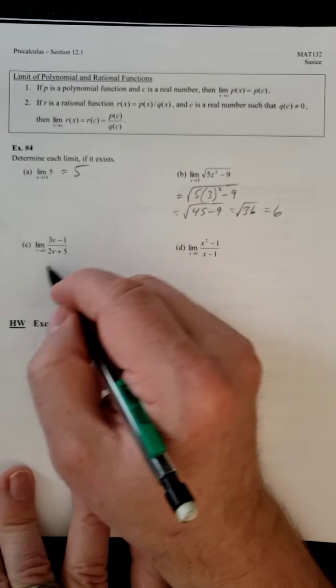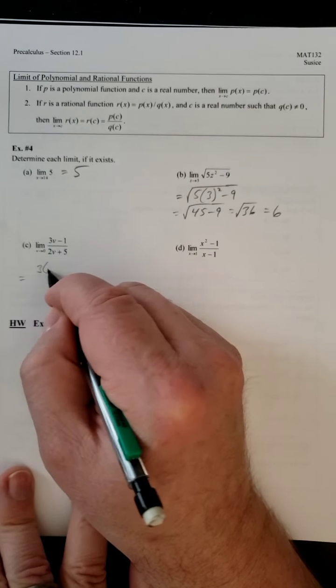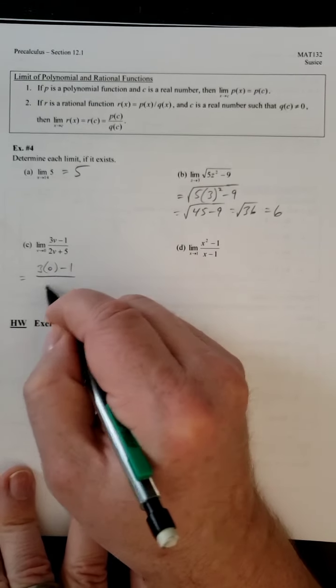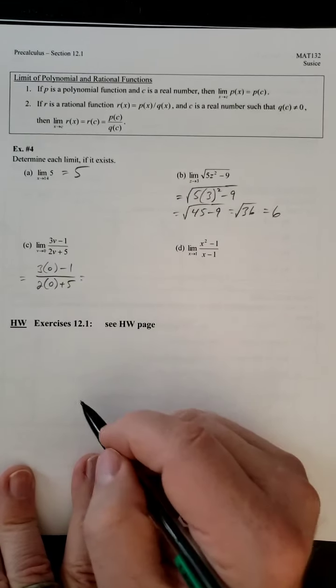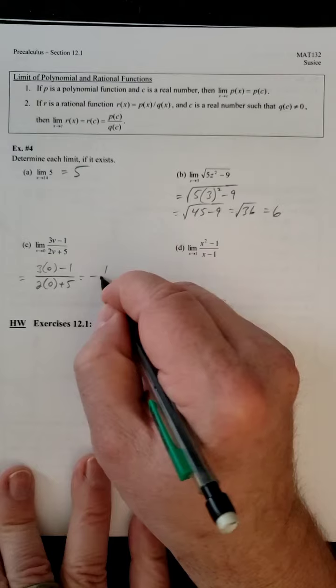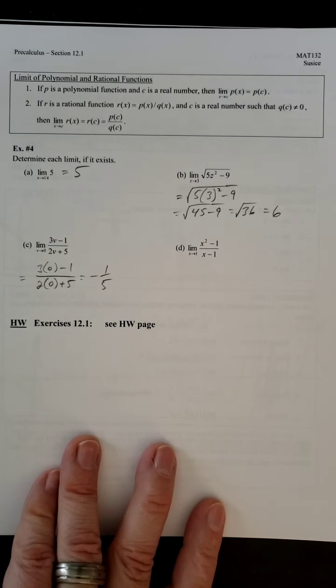Let's see what happens with this one. So, we're approaching 0. So, we have 3 times 0 minus 1 over 2 times 0 plus 5. So, those are going to cancel. So, it looks like it's just going to be negative 1 fifth.